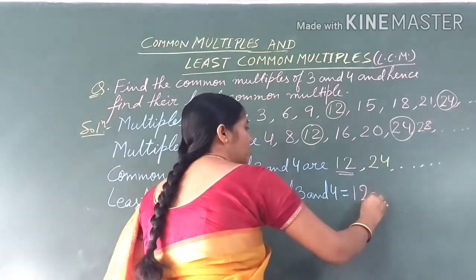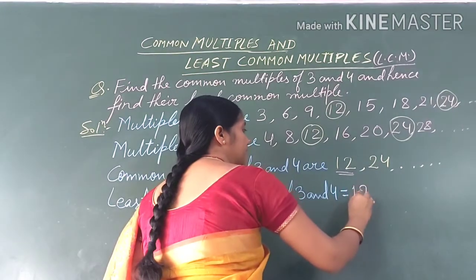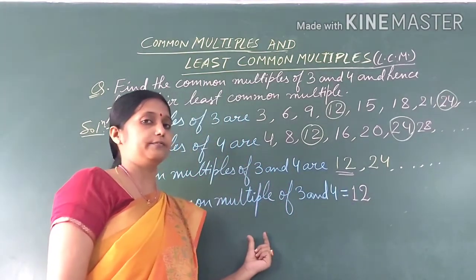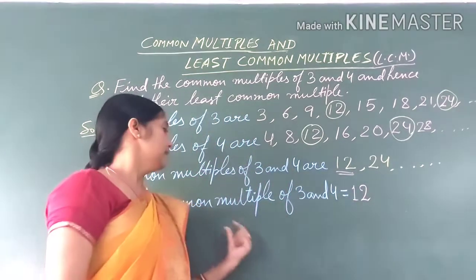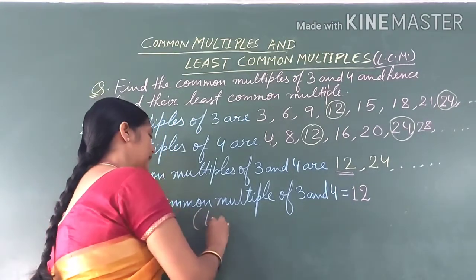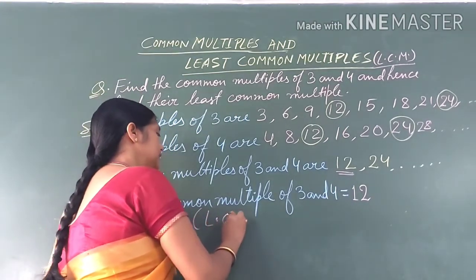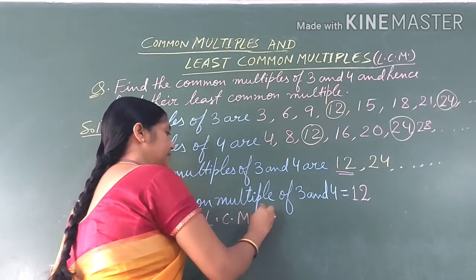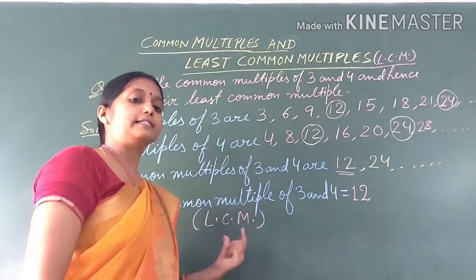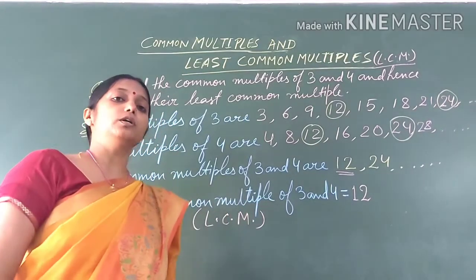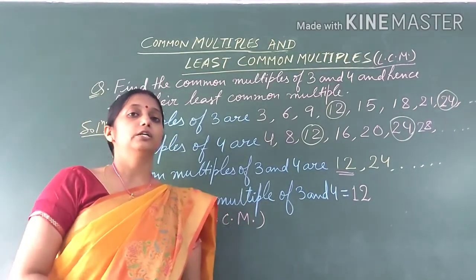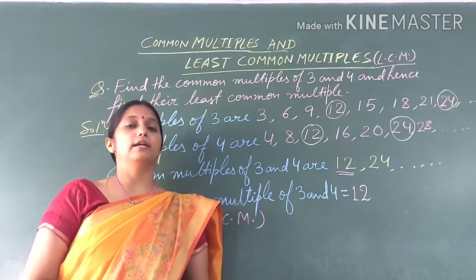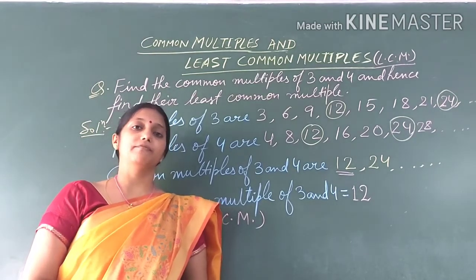The least common multiple means which is the smallest common multiple, which is 12. So the least common multiple of 3 and 4 is 12. That is, LCM of 3 and 4 is 12. This is how we find common multiples and the least common multiple.